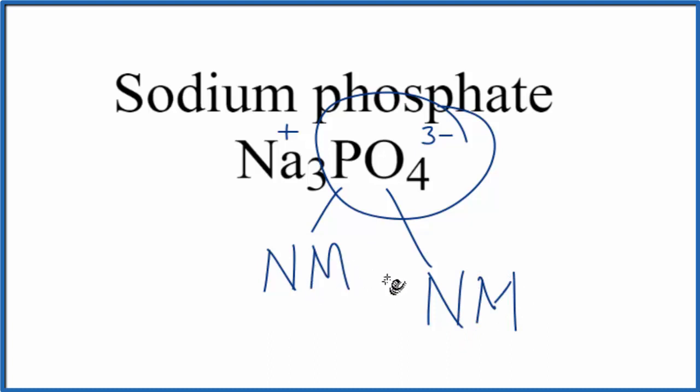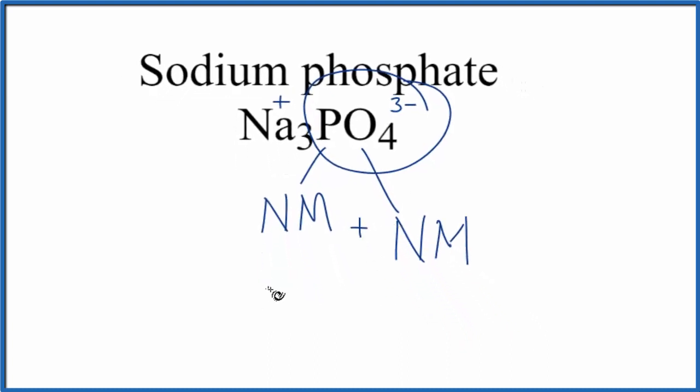When we have a non-metal plus a non-metal, that's going to be a covalent, or molecular bond. So the bond between the phosphorus and the oxygens in the phosphate ion, those are covalent bonds.